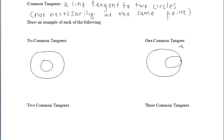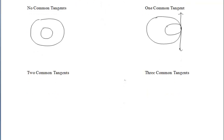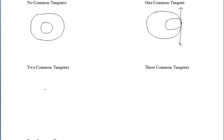No common tangents, we would have to have one circle physically inside of the other. One common tangent, we would have to have a circle inside of the other intersecting that circle at one point.